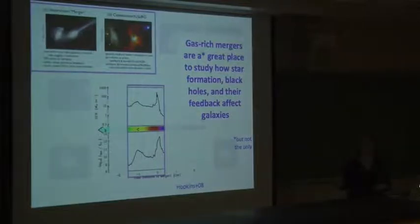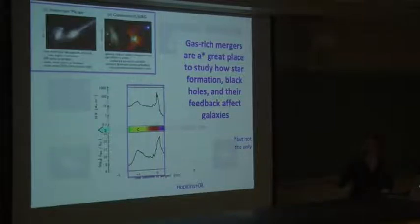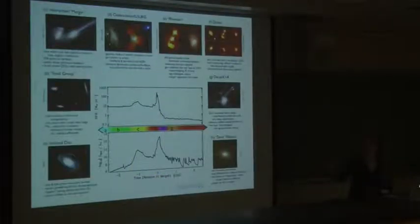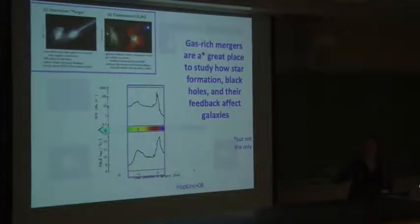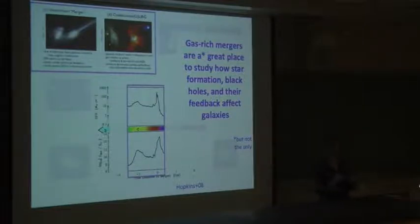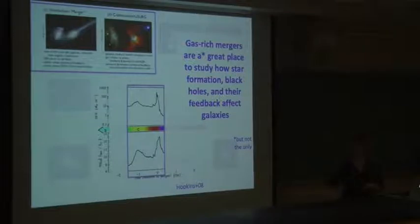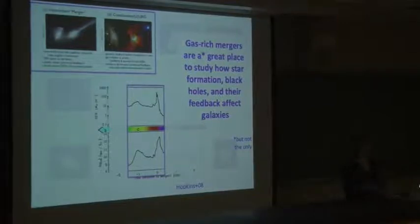This process does happen in at least some galaxies. These two panels in the center show black hole growth on the bottom panel and the star formation rate on the top panel. As a function of different stages of the process, right here in the middle where we have the merger going on, we have lots of star formation and lots of black hole growth. So if you want to study how AGN feedback is affecting star formation rate, this is a really good place to look. This is a really good laboratory to understand how these physical processes interact.